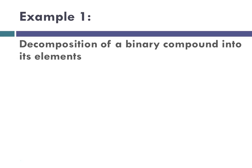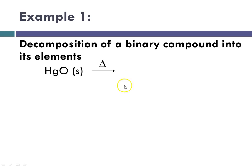Example one: decomposition of a binary compound into its elements. In this case, we have mercury(II) oxide decomposing, and whenever you see this little symbol delta, it means heat. So, that's one of the ways you can recognize decomposition — actually two of the ways: one would be that there's only one reactant, and the second would be noticing heat, light, or electricity — some sort of a catalyst.